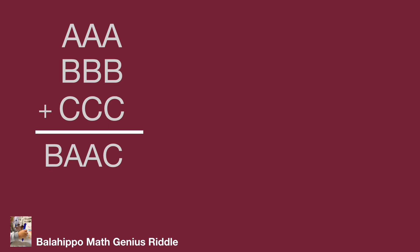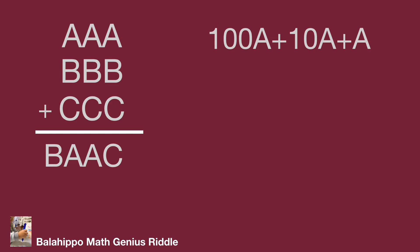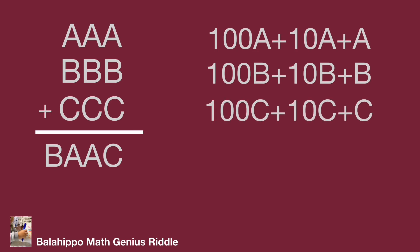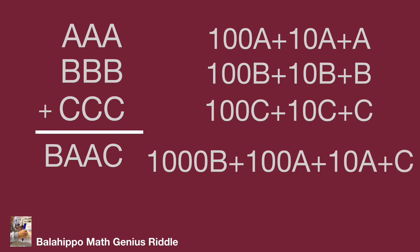I'm going to generate equations to clarify and answer the question. AAA can be expanded to 100A plus 10A plus A. BBB equals 100B plus 10B plus B. And CCC equals 100C plus 10C plus C. The value for BAAC can be expanded to 1000B plus 100A plus 10A plus C. Adding the upper three equations equals the bottom equation.